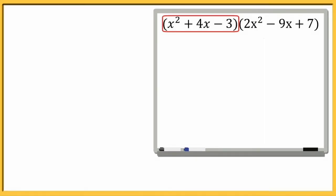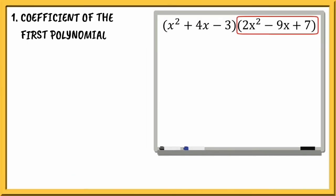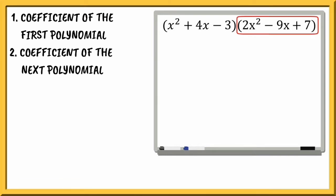The first step that we need to do is to get the coefficient of the first polynomial. The second step is to get the coefficient of the next polynomial.